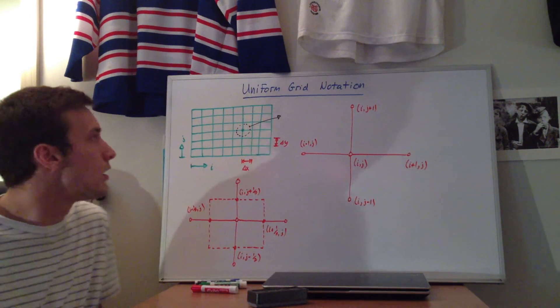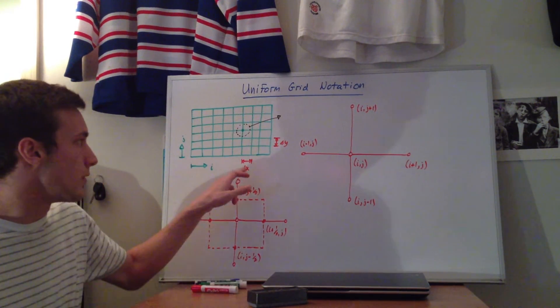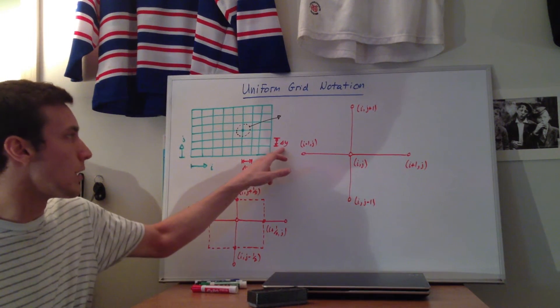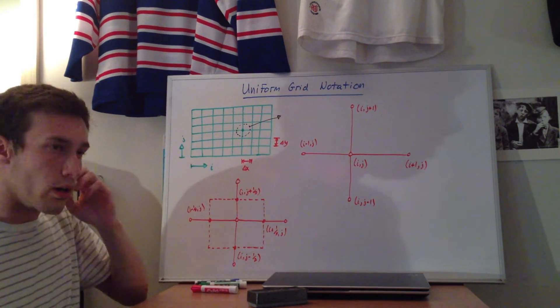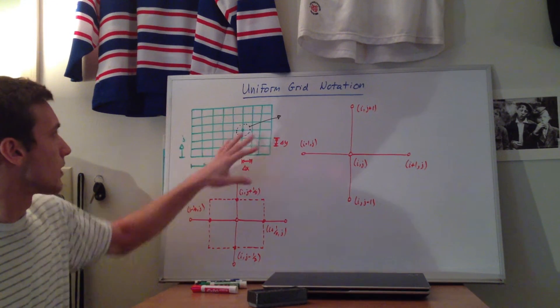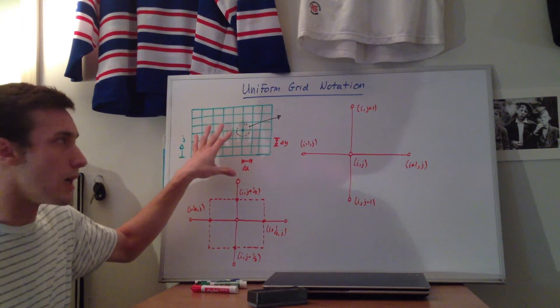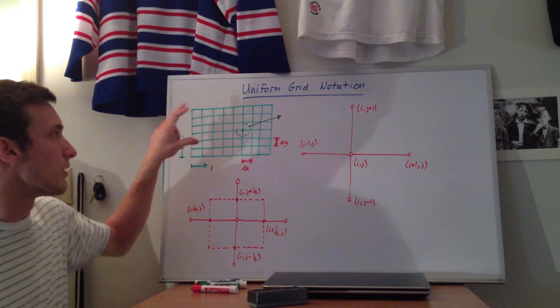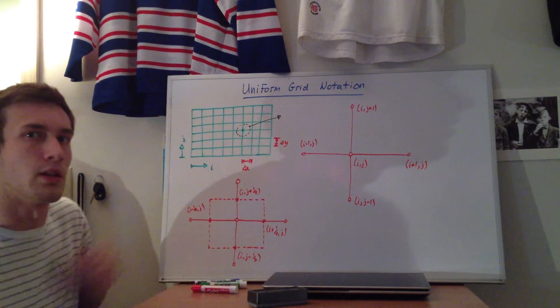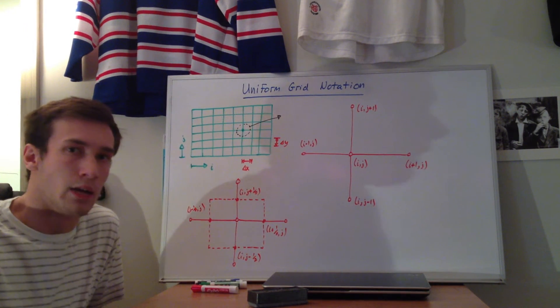Alright, so up here I've drawn a uniform grid, which means that we have the delta x and the delta y in this grid are all going to be the same. So the first thing I want to say is this is a grid describing some domain. In this case, the physical domain is the same as the computational domain. You don't have to worry about that now until we talk about non-uniform grids and curvilinear grids.